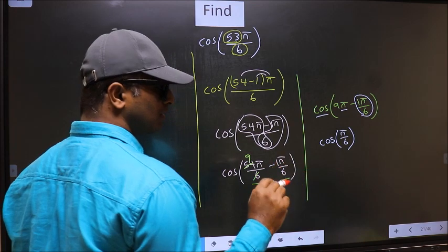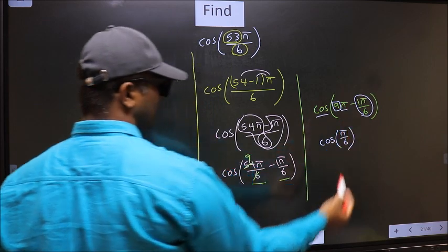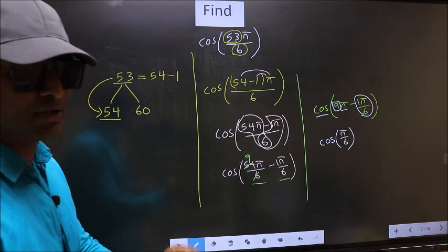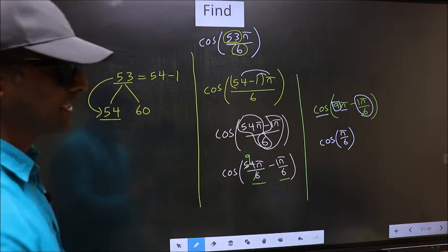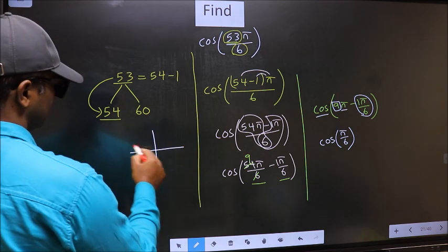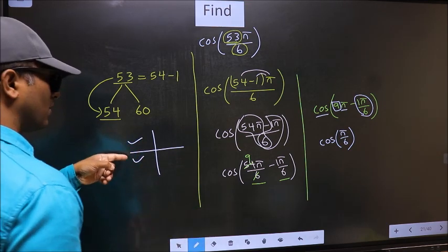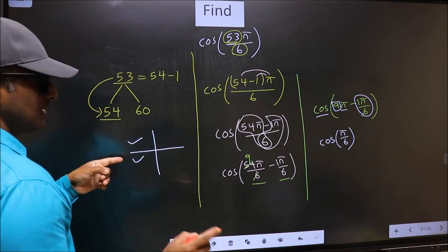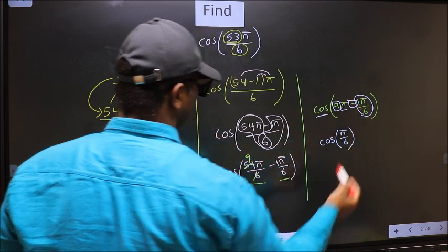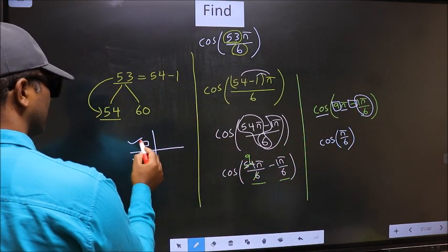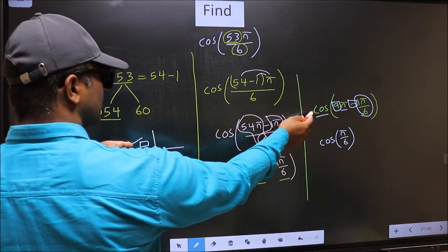To answer that, you should look at the number before π, which is 9. And 9 is odd, and all the odd multiples of π lie either in the second or third quadrant. To check which quadrant, we should look at this symbol. Here we have negative, that means the angle lies in the second quadrant. And in the second quadrant, cos is negative.